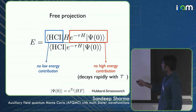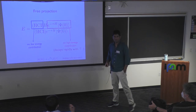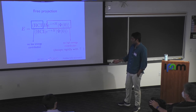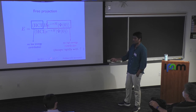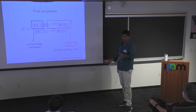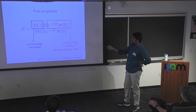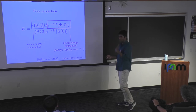Another thing: ψ₀ is usually Hartree-Fock, but you can use coupled cluster instead. Coupled cluster has the same form as the exponential of the Hamiltonian — it's an exponential of a two-body operator — so you can apply the Hubbard-Stratonovich transformation exactly to it. The algorithm: start with coupled cluster (low contribution from high-lying states), project forward a small time to clean up remaining contributions, then use HCI as the trial state to calculate the energy.